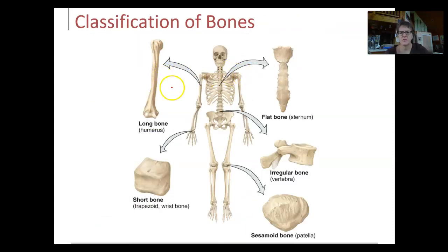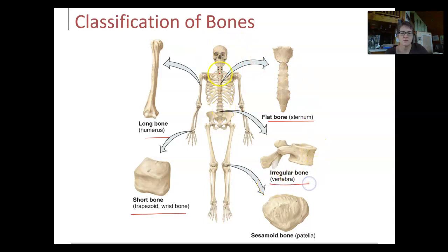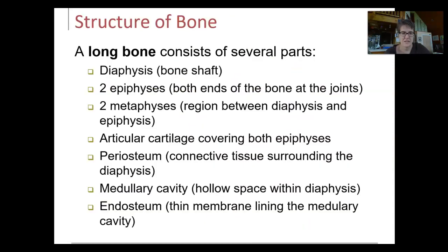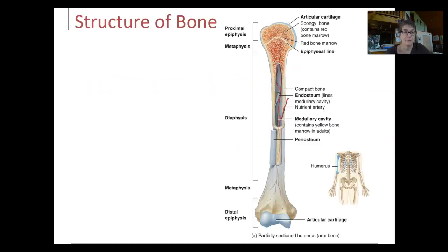The upper arm bone, the humerus, is a long bone. A short bone would be found in your carpals. A flat bone would be the sternum or the majority of skull bones. Irregular bones include the vertebrae and the pelvis. The sesamoid bone is the patella, or kneecap. This is the good stuff — I love this picture.